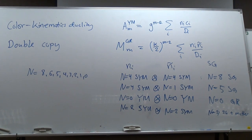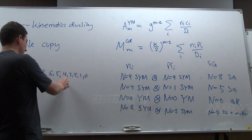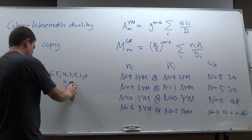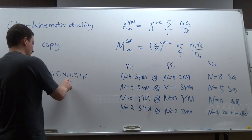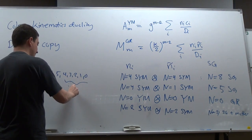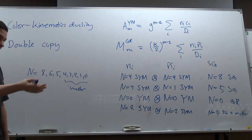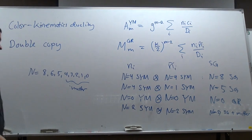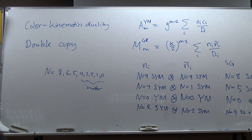If you want to have matter multiplets, you can only have N=4 and below. By matter, I mean gauge field and lower spin fields. This has been proven to be true for tree-level diagrams, and it's essentially the same thing as KLT at tree level.